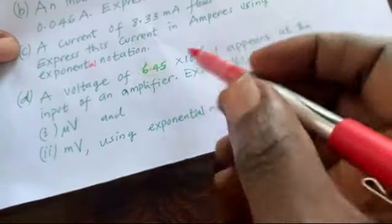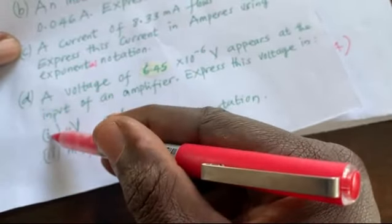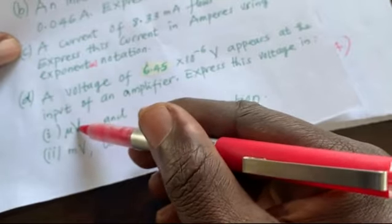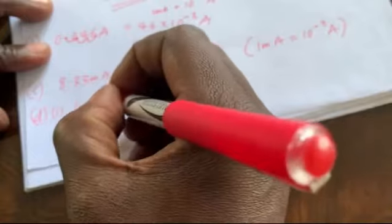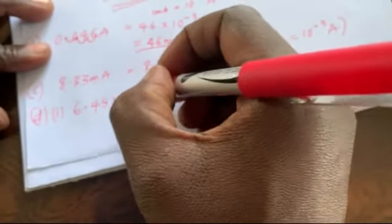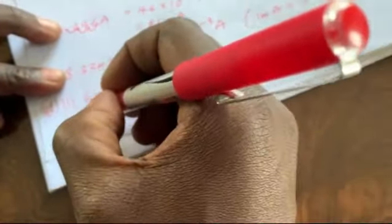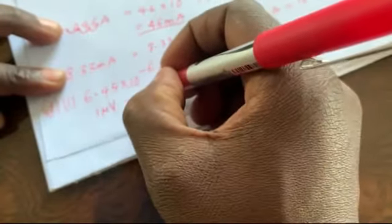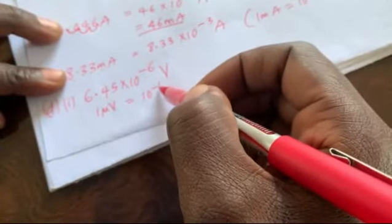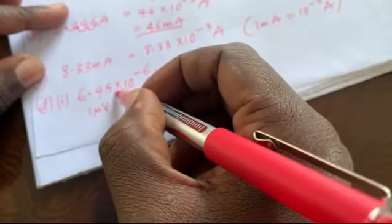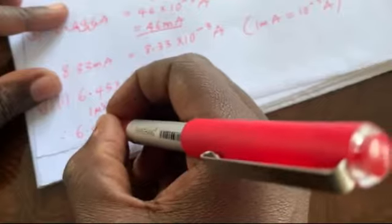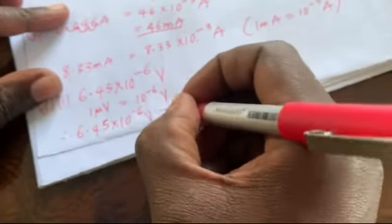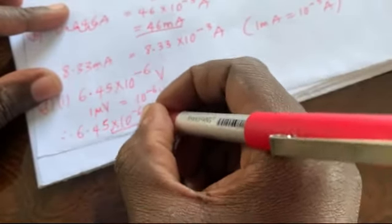Now let us take Part D, roman numeral 1: convert the voltage to microvolt. Our voltage value is 6.45 times 10 raised to the power of minus 6 volt. We know that 1 microvolt is 10 raised to the power of minus 6 volt because micro is 10 raised to the power of minus 6. This means we can simply remove the 10⁻⁶ and put the micro prefix in its place. Therefore, 6.45 times 10⁻⁶ volt equals 6.45 microvolt.